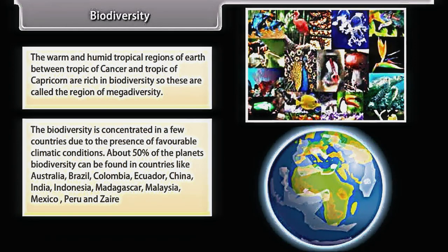The biodiversity is concentrated in a few countries due to the presence of favorable climatic conditions. About 50% of the planet's biodiversity can be found in countries like Australia, Brazil, Colombia, Ecuador, China, India, Indonesia, Madagascar, Malaysia, Mexico, Peru, and Zaire.